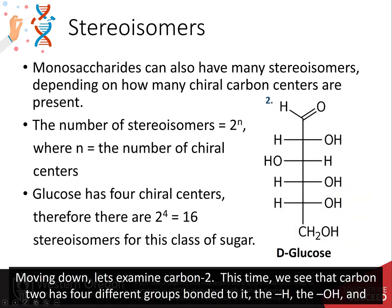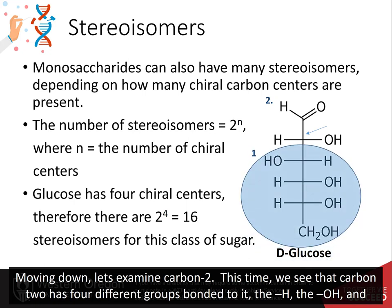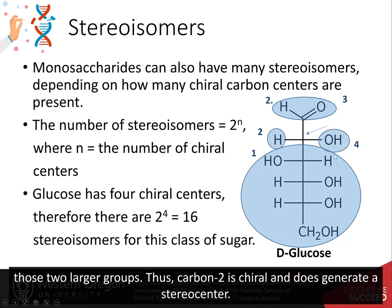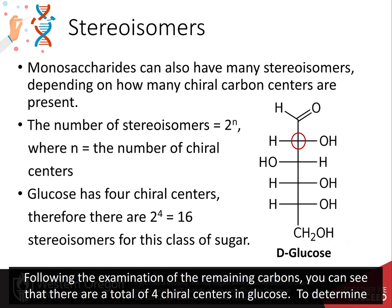Moving down, let's examine carbon 2. We see that carbon 2 has four different groups bonded to it: the H, the OH, and the two larger groups. Thus, carbon 2 is chiral and does generate a stereocenter. Following the examination of the remaining carbons, you can see that there are a total of four chiral carbon centers in glucose.